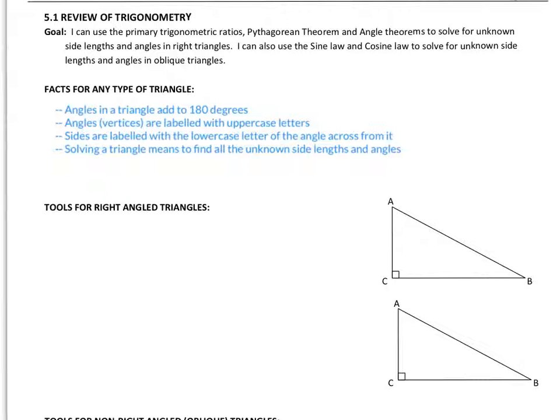Our goal today is to use the primary trig ratios, Pythagorean theorem and angle theorems to solve for unknown side lengths and angles in right triangles. You should also be able to use the sine law and cosine law to solve for unknown side lengths and angles in oblique or non-right angle triangles.